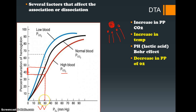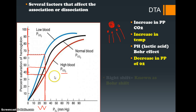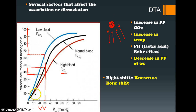As CO2 levels decrease — when we slow down and stop working, so there is a low level of CO2 within the working muscles — going up the curve shows a greater saturation, and only a small amount is dissociated into the working muscles. When there is a shift to the right of this association-dissociation curve, we call that the Bohr shift. Anything moving to the right encourages dissociation; anything moving to the left encourages association.